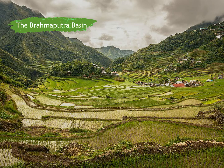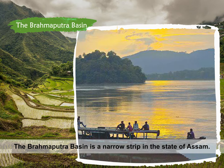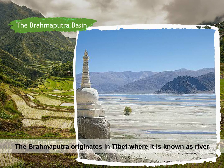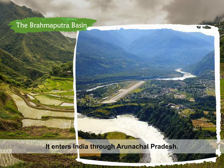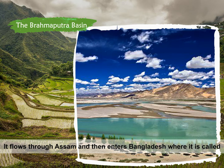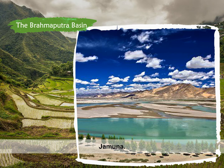The Brahmaputra Basin is a narrow strip in the state of Assam. The Brahmaputra originates in Tibet, where it is known as River Tsangpo. It enters India through Arunachal Pradesh, flows through Assam, and then enters Bangladesh, where it is called Jamuna.